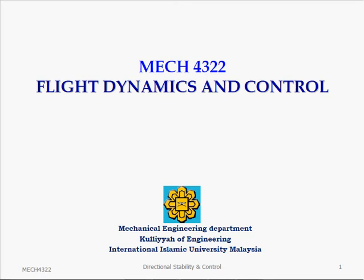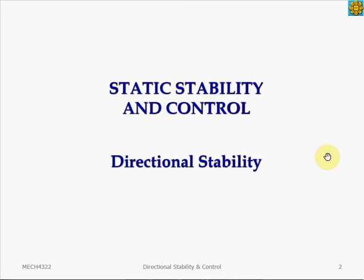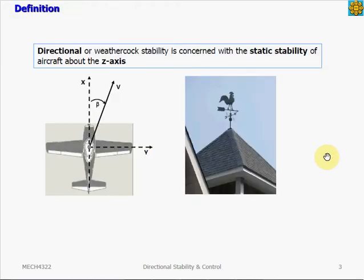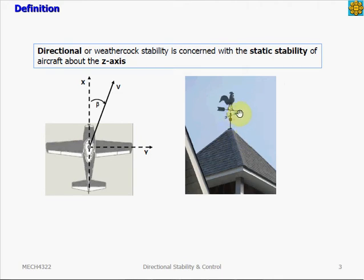Our topic today is about aircraft directional stability. We're still in the area of static stability. Directional stability is concerned with the static stability of an aircraft about the z-axis. Directional stability is also called weathercock stability because its characteristics are the same as this weathercock, which has an arrow that will always point towards the direction of the wind.